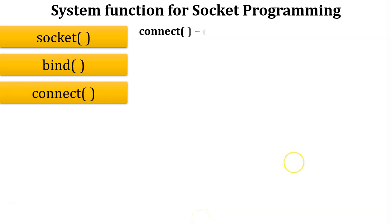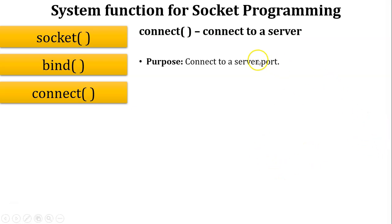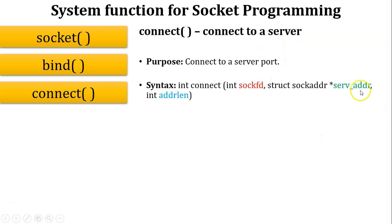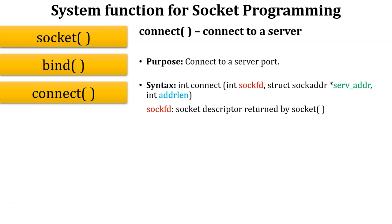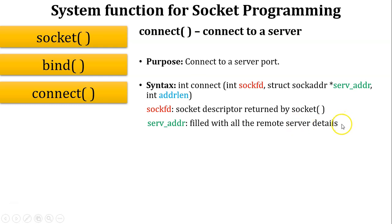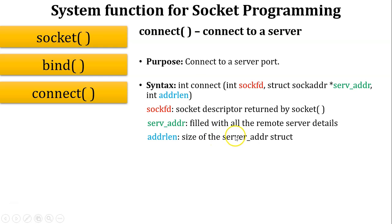The next function is connect, meaning connect to a server. The purpose of the connect function is to connect to a server port; this function is used by the client. The syntax is: int connect(sockfd, server_address, address_length). The first argument is sockfd, the same socket descriptor as in bind. The second argument server_address is filled with all remote server details — the server IP address and port number of the specific service. The last argument is address_length, the size of the server address. Writing connect is similar to bind.